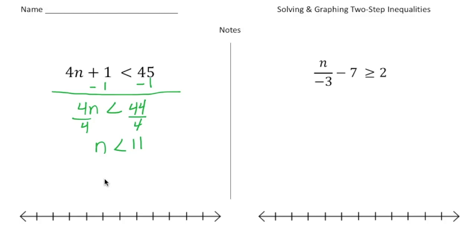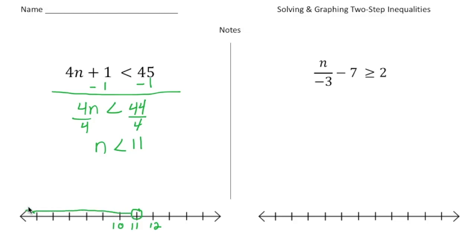Now I need to graph this. I'm going to put 11 right here, with 12 to the right and 10 on the left. Since n is less than 11, it's going to be an open circle, and it's going to shade all the values to the left of 11.